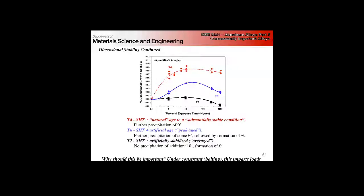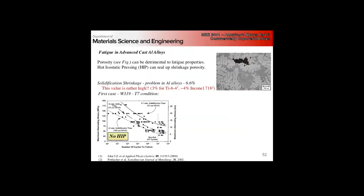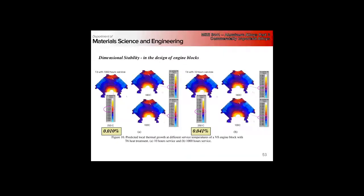Under T4 solution heat treat and naturally aged, during this whole service, we have further precipitation of the theta prime phase. So we have dimensional growth basically over the whole life. T6, we solution heat treat and artificially age to a peak age state. So we do get some further growth of the theta prime, but then followed by the formation of theta. At T7, we have no additional precipitation of the theta prime. We have growth of the theta phase. Why is this important? Because under constraints, this is going to give us loads.